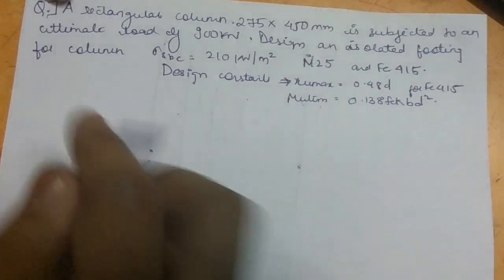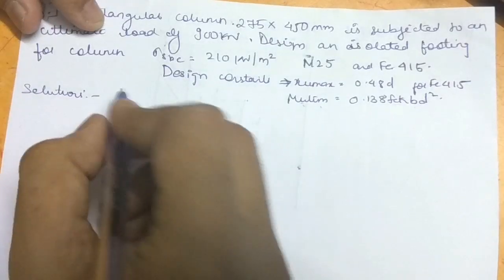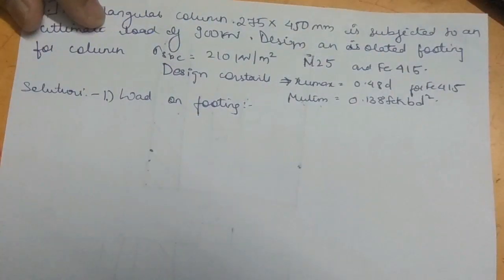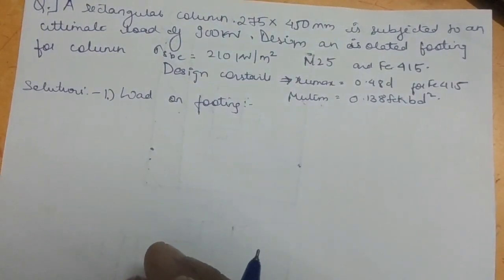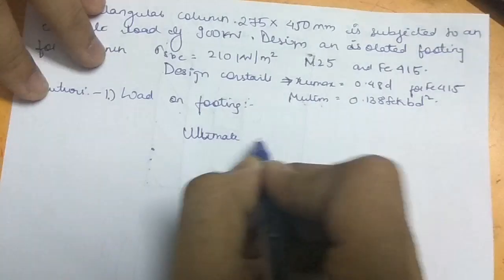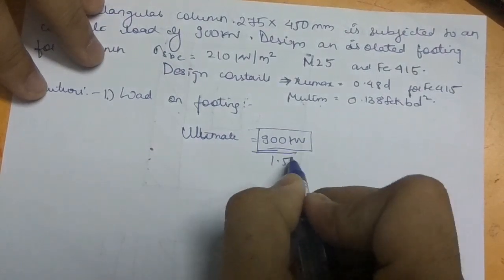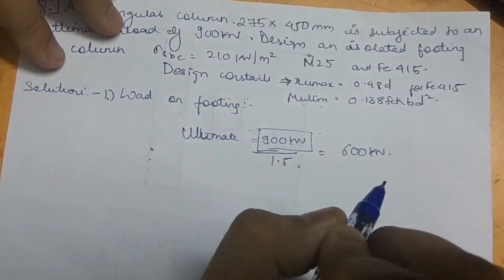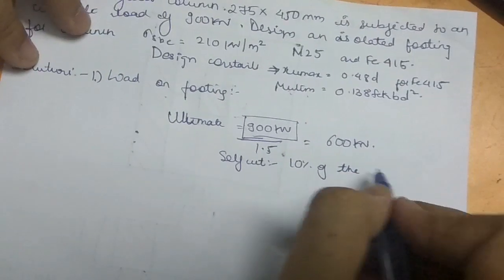The very first step is to calculate the load acting on the footing. There are two types of load: the imposed load coming down from the column, and the self weight of the footing itself. The ultimate load is 900 kN, but we divide it by the partial safety factor of 1.5 to get the working load, which is 600 kN.